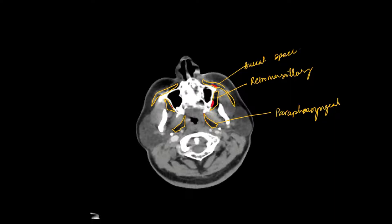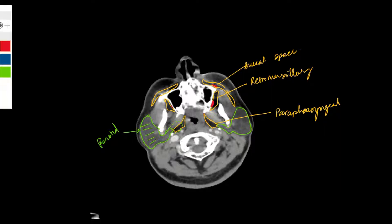Once we're done with that, what we are left with is easy — we have the bigger space which is the parotid space. The crazy thing about the parotid space is it has a superficial lobe and also a deep lobe. The deep lobe is kind of abutting the parapharyngeal space — it's like trying to grow more. If it grows, it will actually push that space outward, and that's how you will be able to see it.